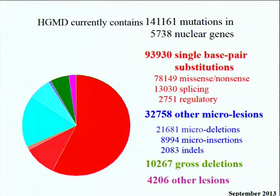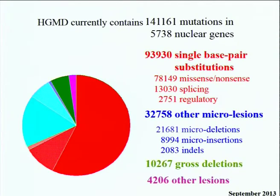One of the privileges of curating a database of this size and utility for human geneticists is that we get quite a lot of feedback from the scientific community. About half of this feedback approximates to fan mail telling us that what we're doing is wonderful. And about half of it is, if not hate mail, at least mail suggesting that we do things in other ways or better.